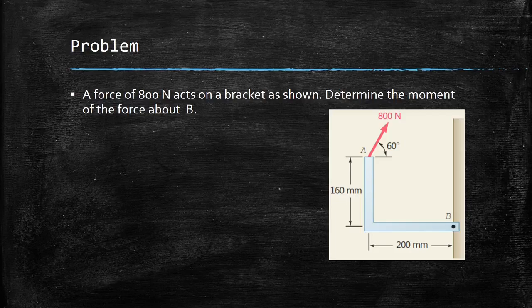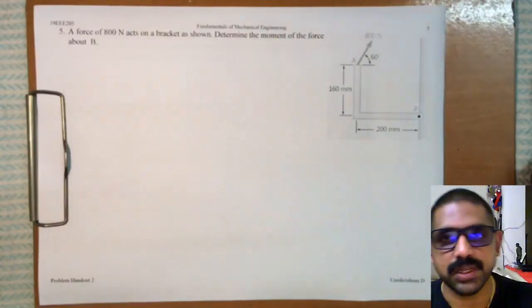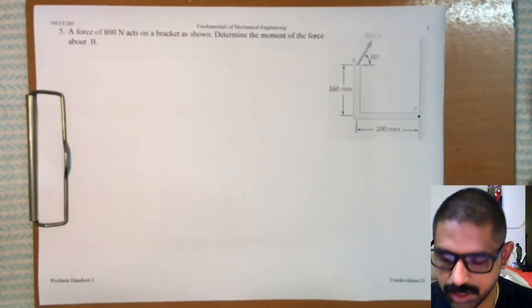Hello friends, today we are going to see yet another problem in engineering mechanics. This time the problem we are going to solve is the moment of a force about a point. Given here: a force of 800 Newton acts on a bracket as shown. Determine the moment of the force about point B.